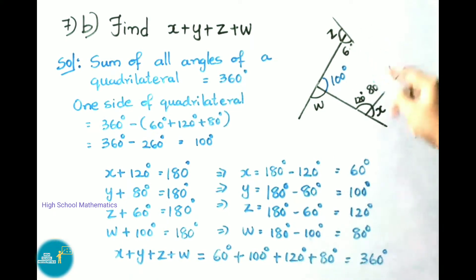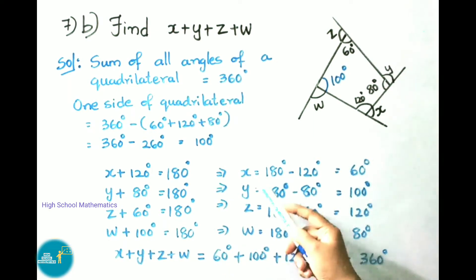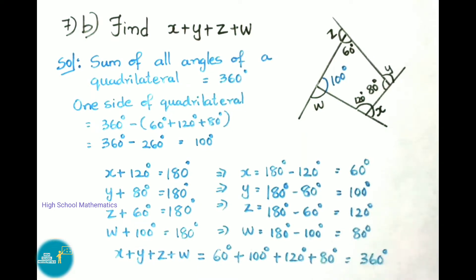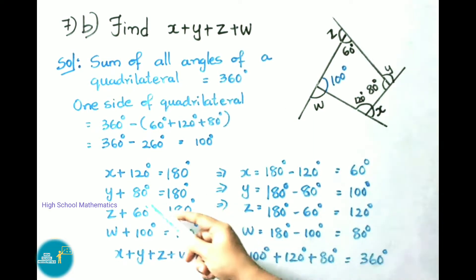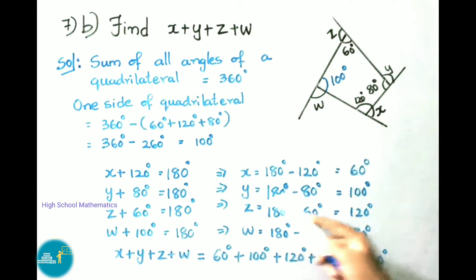Now we find x, y, z, and w as exterior angles forming linear pairs. x + 120 = 180, so x = 60 degrees. y + 80 = 180, so y = 100 degrees.